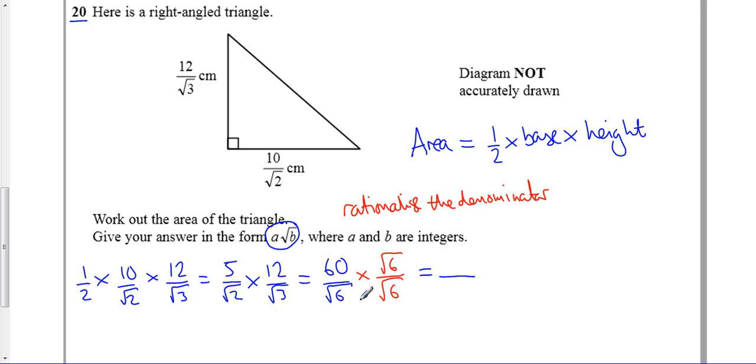So on the bottom I get root 6 times root 6, root 36, or just ordinary 6. On the top I get 60 root 6.